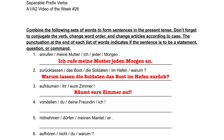In the next one, we have another command, this one for the du form, which means we don't actually need an ending on the verb whatsoever. We just say stell. Vor goes at the end of the sentence of course. So we have: Stell mir deinen Freunden vor — introduce your friend to me.